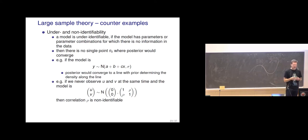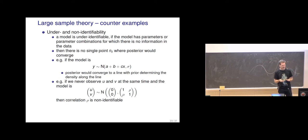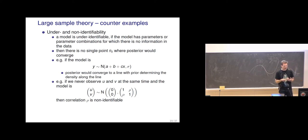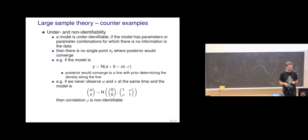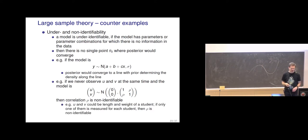Another example: we want to find the correlation between two variables, say height and weight. We measure height for half the students and weight for the other half, but with no student having both measurements, we're not able to learn how height and weight correlate. The correlation is non-identifiable. These kinds of non-identifiability examples occur surprisingly easily.